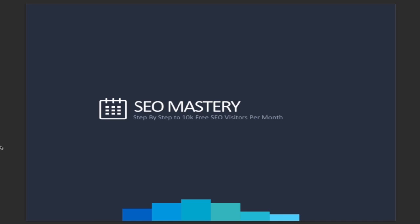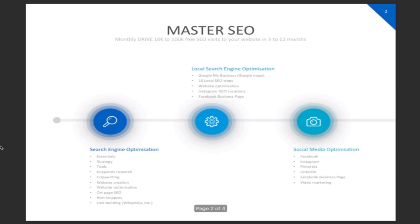Welcome to the SEO Mastery course. This course has three key main pillars: search engine optimization, local search engine optimization, and social media optimization. We go from the very essentials — helping you set up these strategies and tools, conducting keyword research, all the way up to copywriting and website creation.